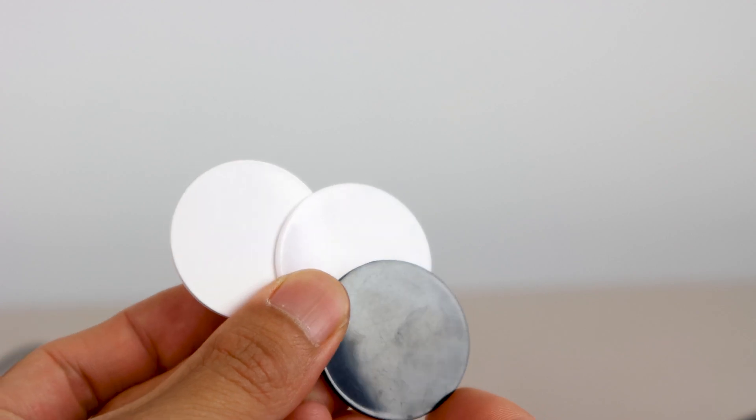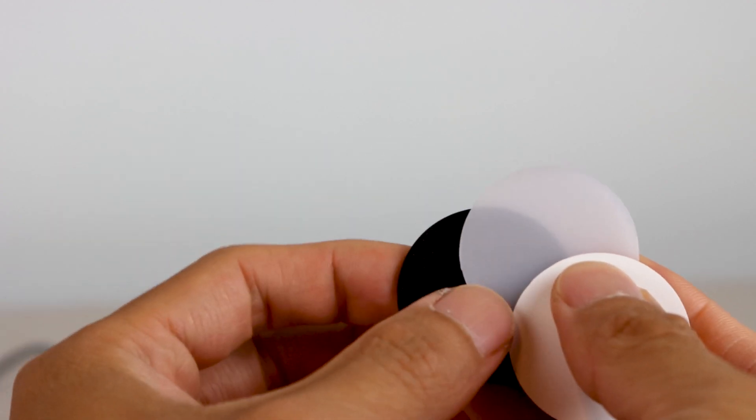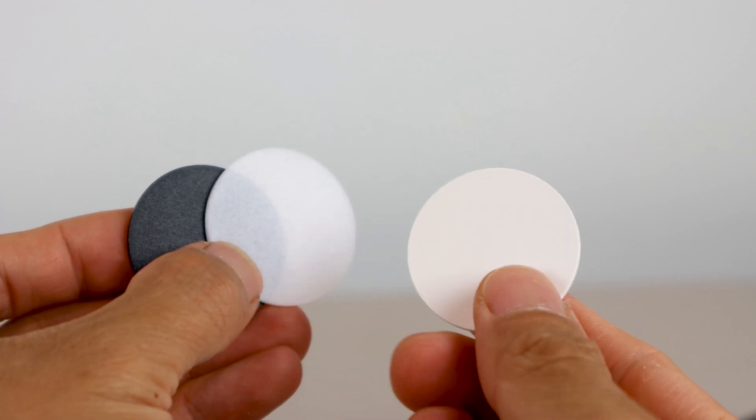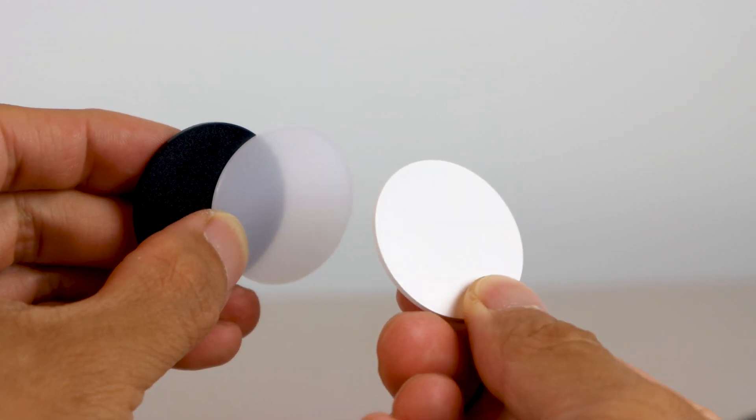When installing the filters, note that there's a shiny side and a matte side of each disk. Be sure to install the disk's matte side up so that the light can pass through and diffuse correctly.